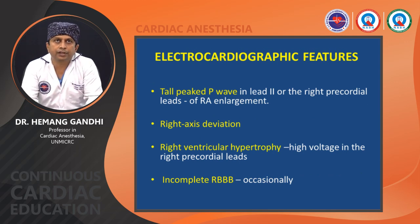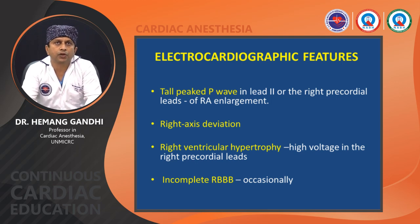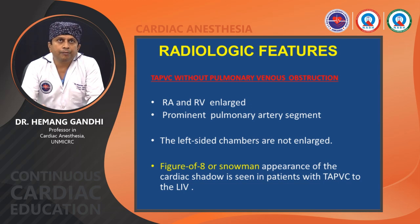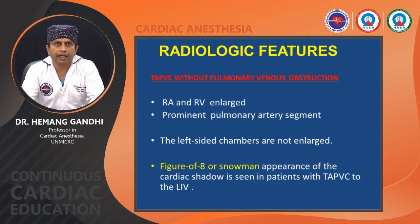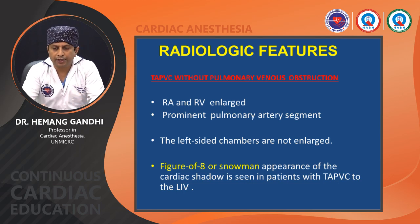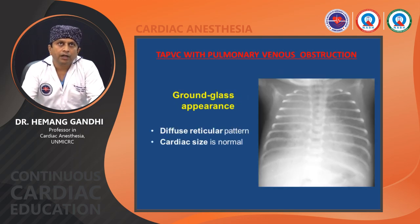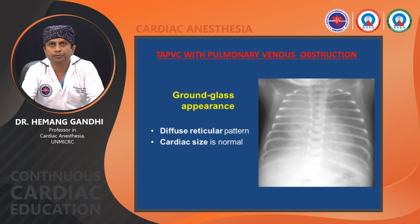For diagnosis, echocardiography is the most common modality. On ECG, tall peaked P waves in lead 2 or right precordial leads, right axis deviation, right ventricular hypertrophy, or occasionally incomplete RBBB may be seen. Radiologically, TAPVC without obstruction shows enlarged RA and RV, prominent pulmonary artery segments, and non-enlarged left-sided chambers, giving the classic figure-of-eight or snowman appearance in patients draining to the left innominate vein. TAPVC with pulmonary venous obstruction may show a ground-glass appearance with usually normal cardiac size.